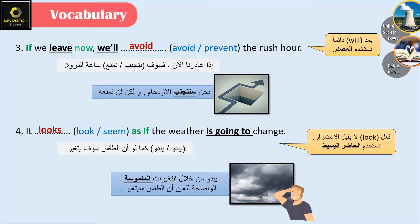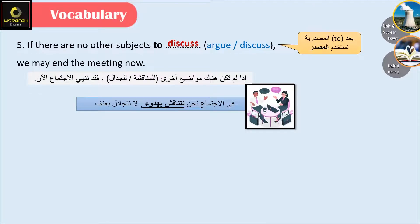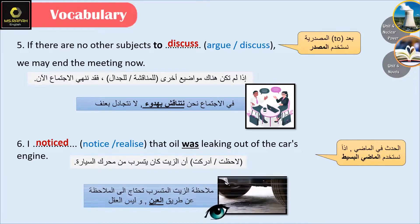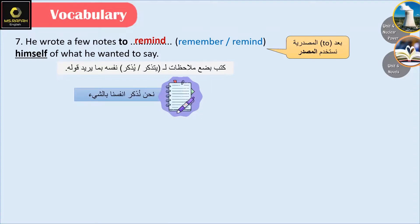'It looks as if the weather is going to change.' I can see with my eyes that clouds are forming, so we use looks. 'If there are no other subjects to discuss, we may end the meeting now.' In a meeting we discuss, we don't argue. 'I noticed that oil was leaking out of the car's engine.' I observed it with my eyes. 'He wrote a few notes to remind himself of what he wanted to say.' He used something to remind himself.